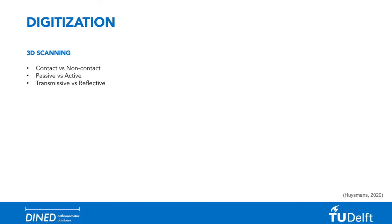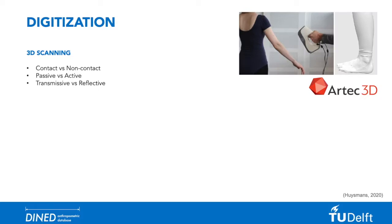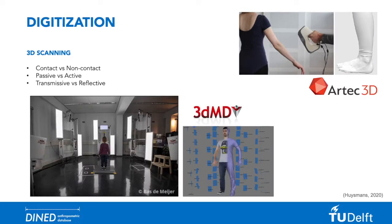Digitization is a process of capturing 3D objects, such as the human body, in a digital file format that can be used for design or other purposes. There are many types of digitization methods. There are two main types of 3D scanning that we use at the Faculty of Industrial Design Engineering at TU Delft.